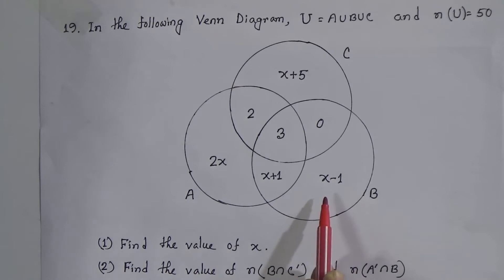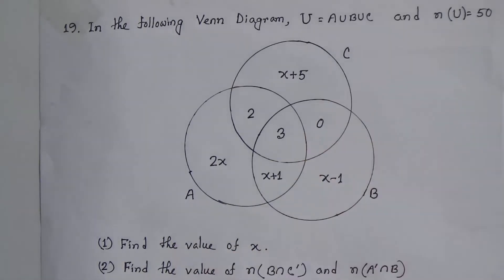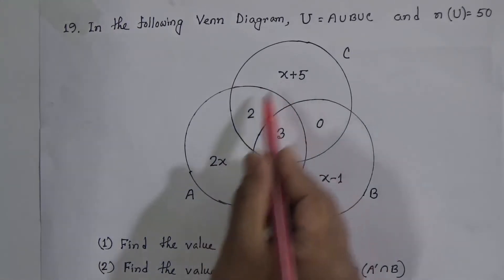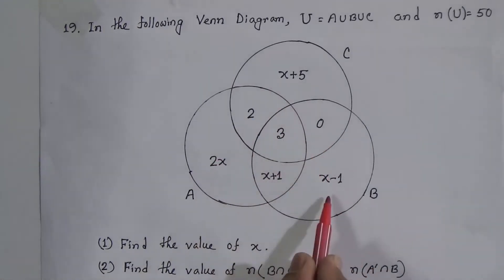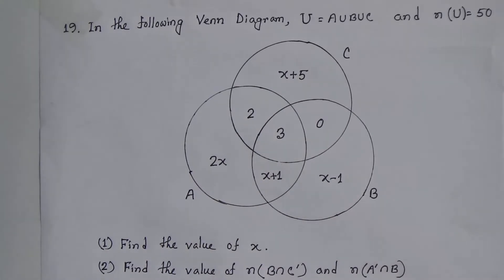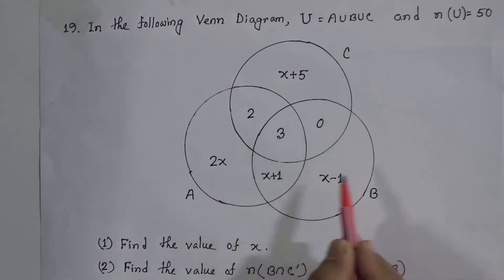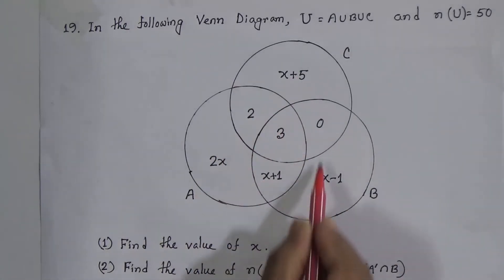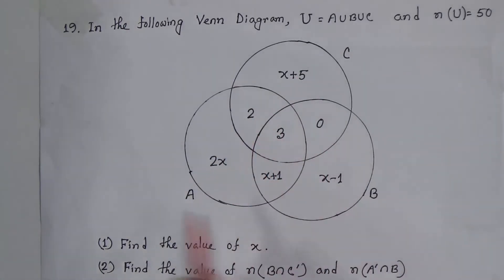When we do the union of sets A, B, and C, we find out these seven disjoint sets. The number of elements of A union B union C will be the addition of these seven disjoint sets.